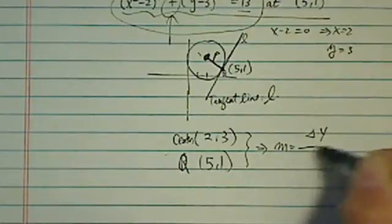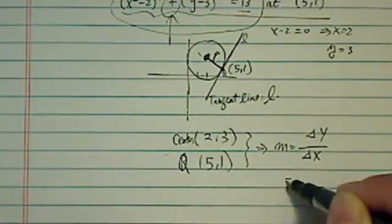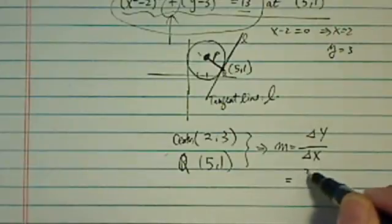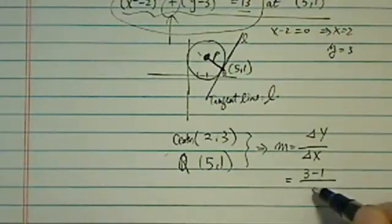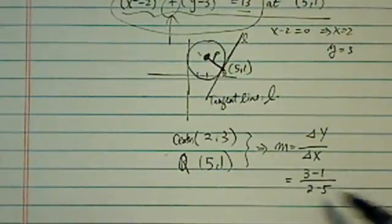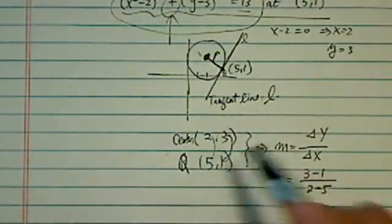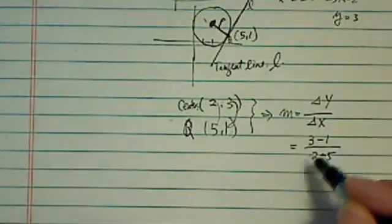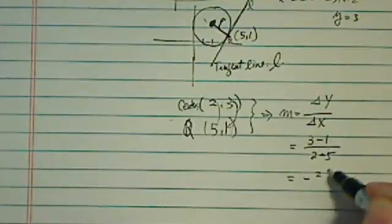the slope is change in y over change in x, which is pretty easy to calculate. So I'm going to have 3 minus 1 and 2 minus 5. So basically I took the difference between y and the difference between x, and here I have minus 2 over 3.